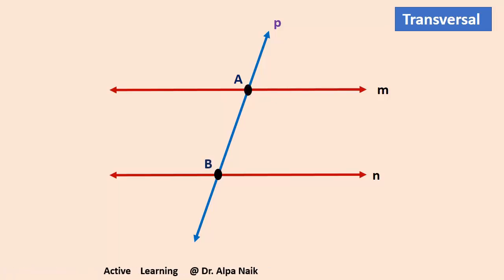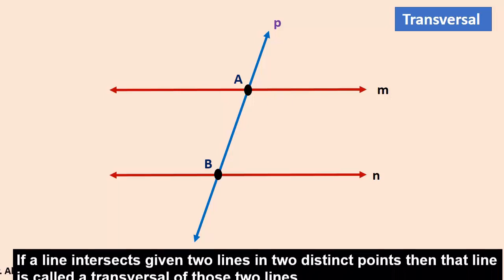All these three lines are coplanar lines. Now we are going to study about the angles made by this transversal.